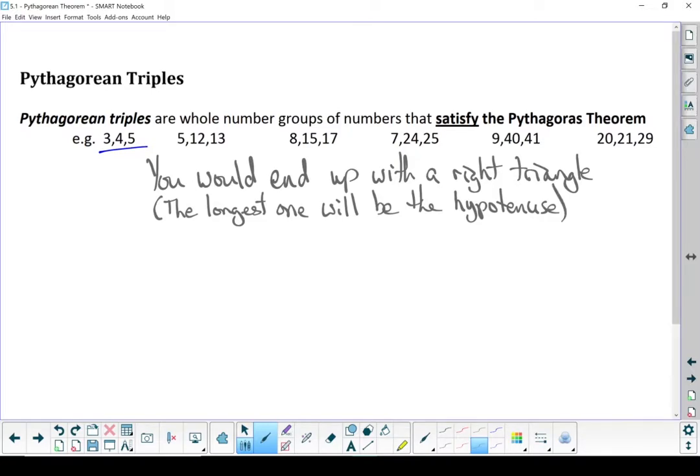Remember, our Pythagorean Theorem is hypotenuse squared equals leg squared plus leg squared. Or, c squared equals a squared plus b squared.